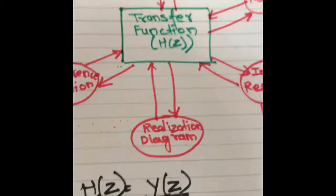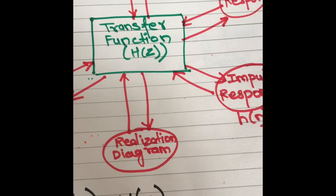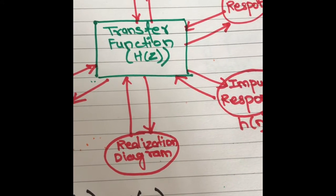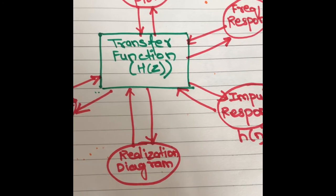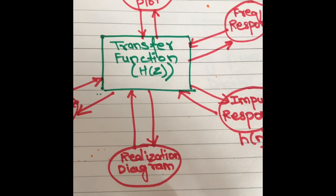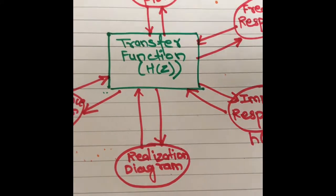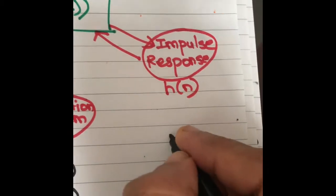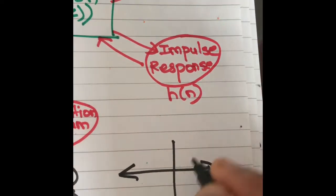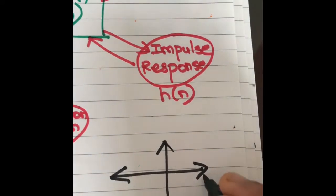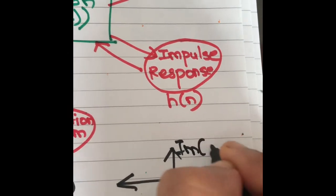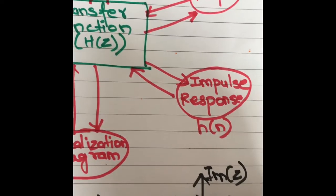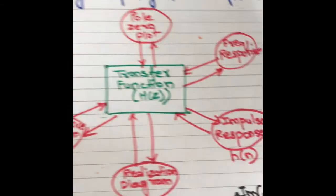From the transfer function, we can find the pole-zero plot. The roots of the denominator polynomial give us the poles, and we can plot them on a pole-zero plot. The pole-zero plot has polar coordinates — the real part of z and the imaginary part of z — with certain poles and zeros plotted, along with the unit circle.